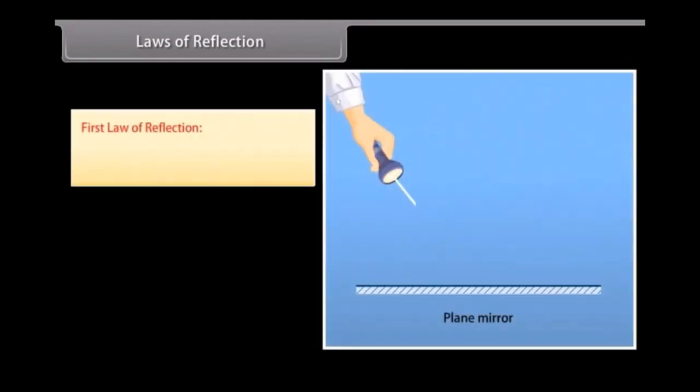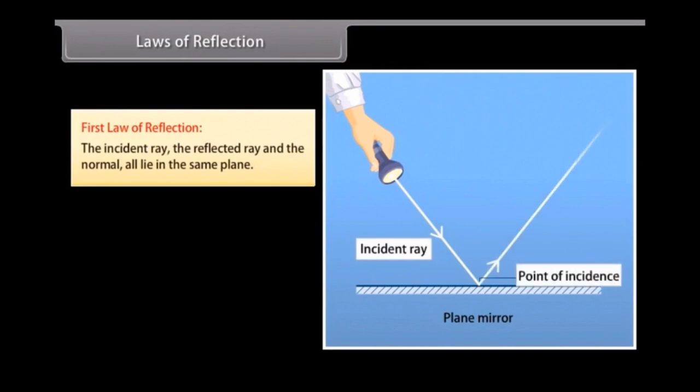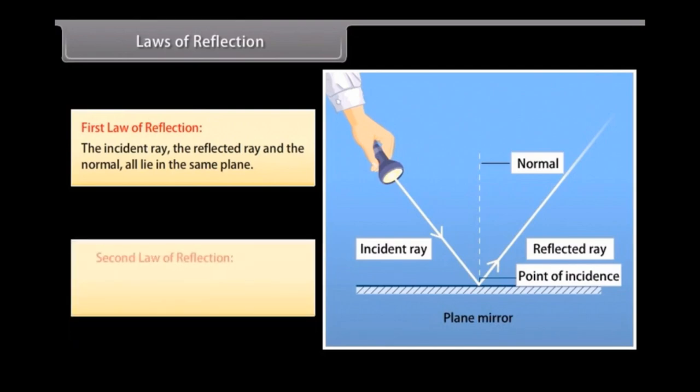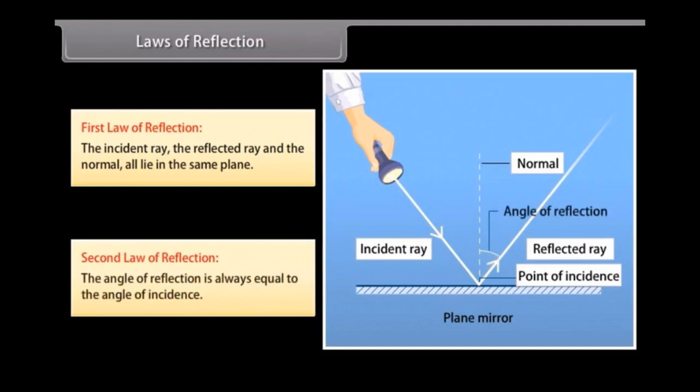Laws of reflection. First law of reflection: the incident ray, the reflected ray, and the normal all lie in the same plane. Second law of reflection: the angle of reflection is always equal to the angle of incidence.